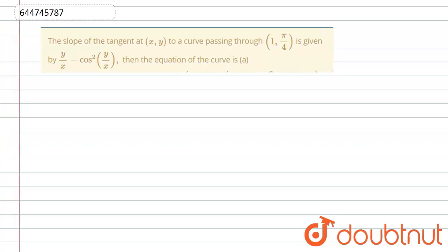In this question, the slope of the tangent at (x, y) to a curve passing through (1, π/4) is given by y/x minus cos²(y/x). Then we have to find the equation of the curve.